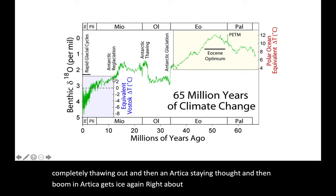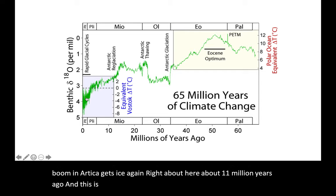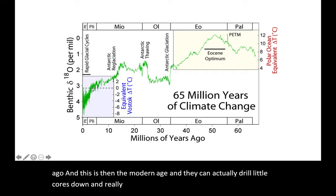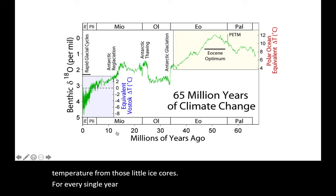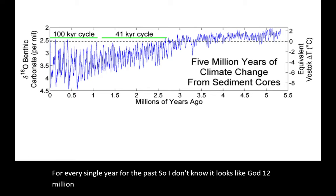Then boom, Antarctica gets ice again right about here, about 11 million years ago, and this is the modern age. They can actually drill little cores down in really ancient ice on Antarctica and read out the temperature from those little ice cores for every single year for the past roughly 12 million years.